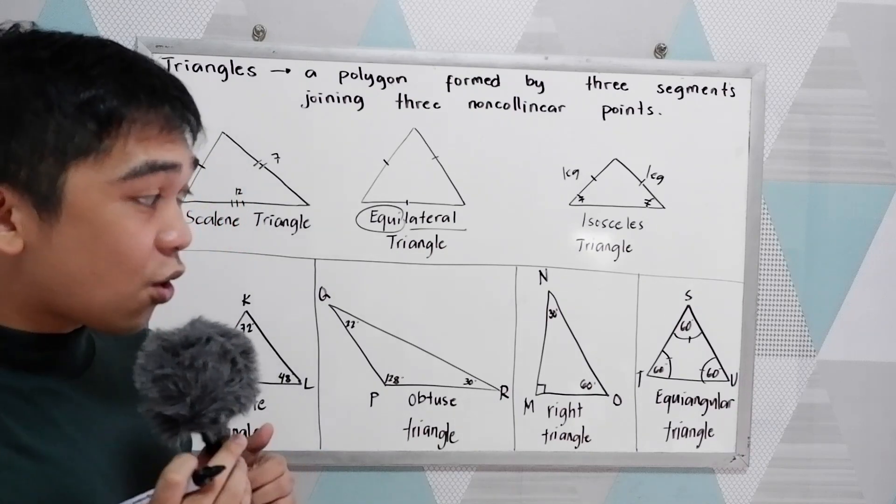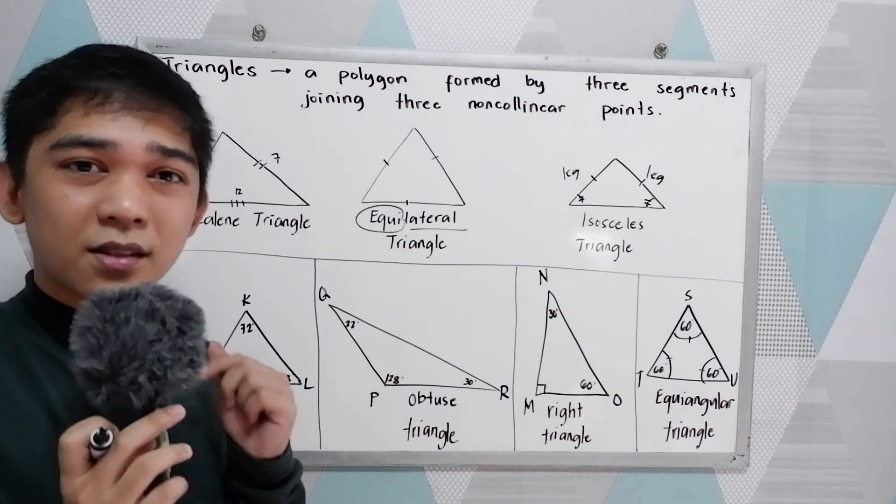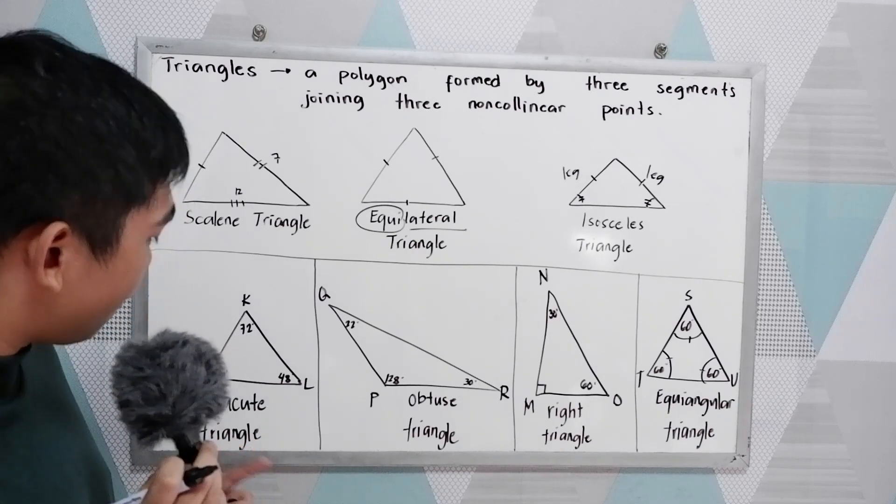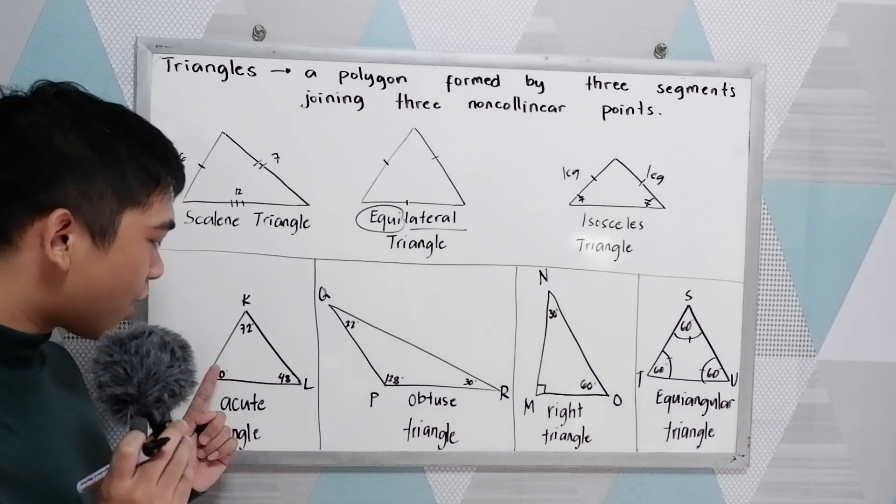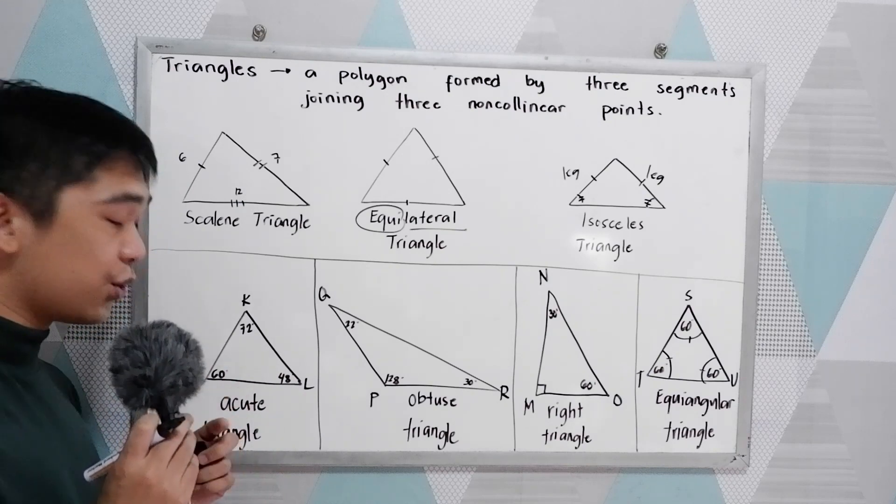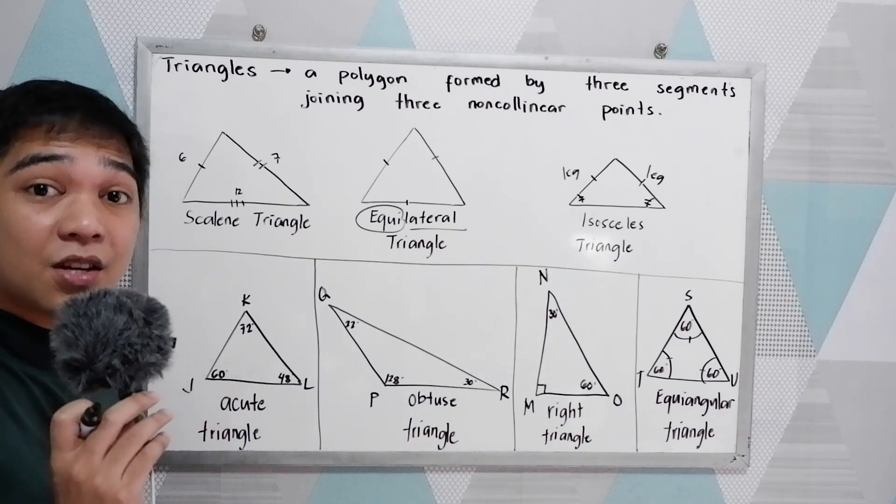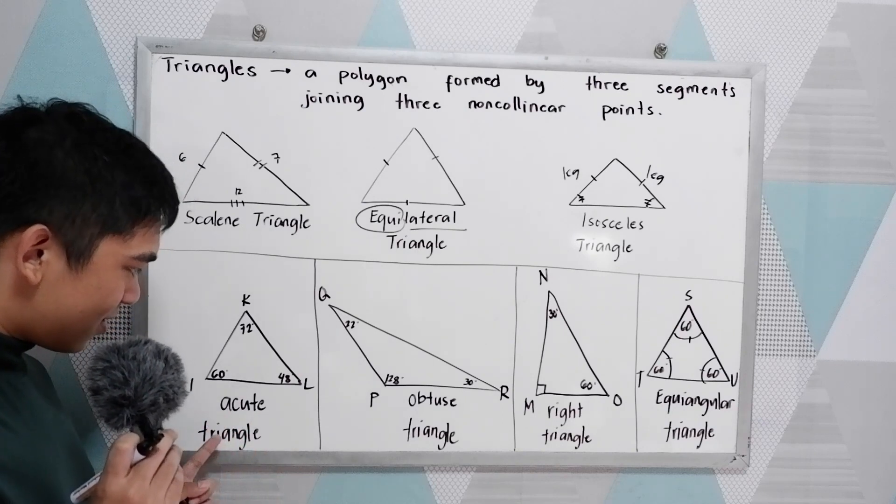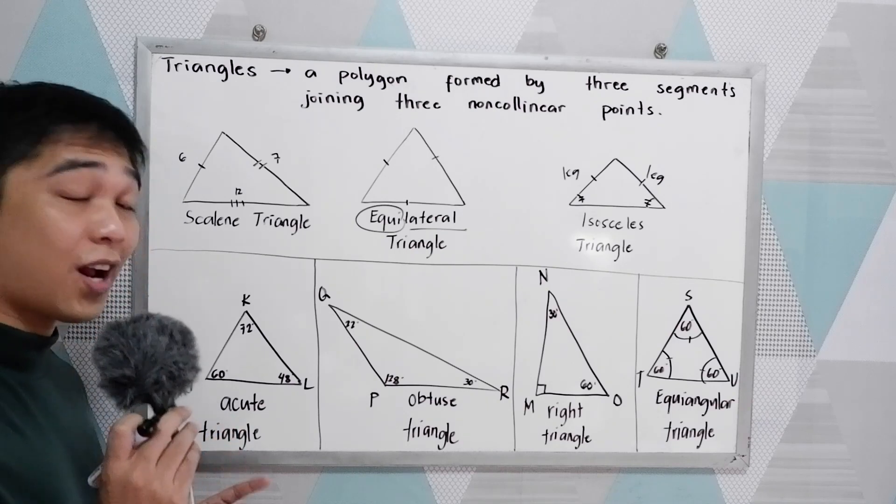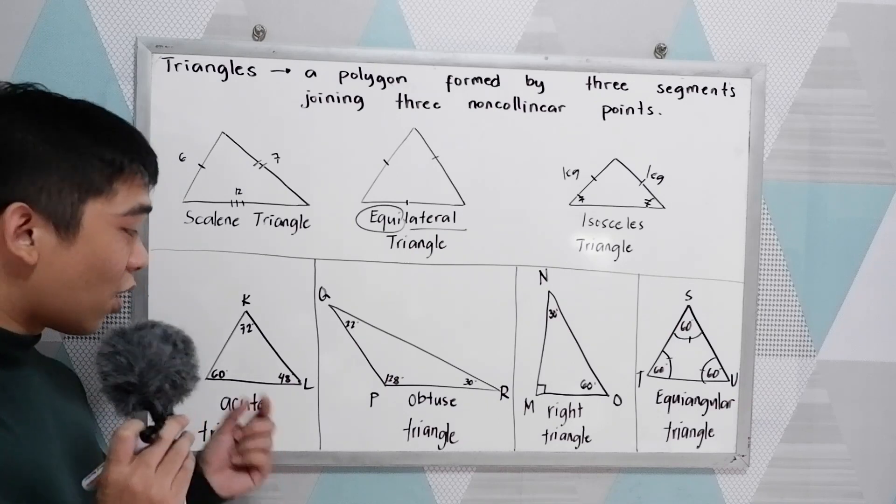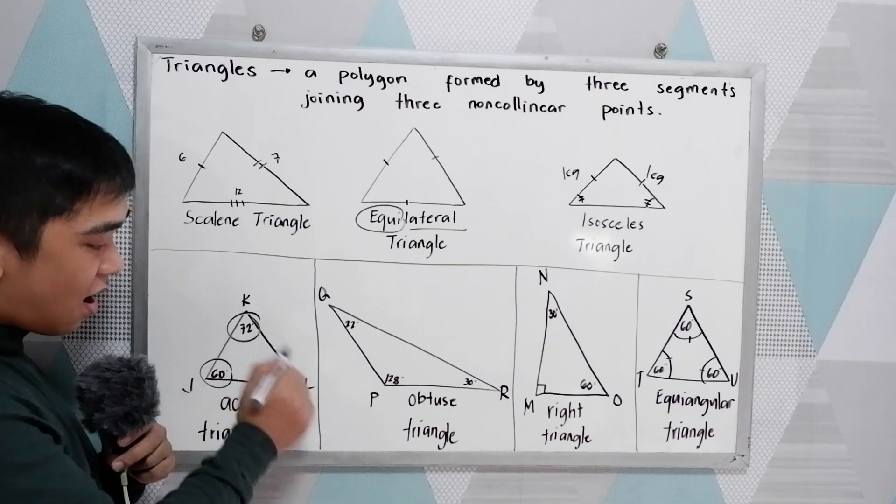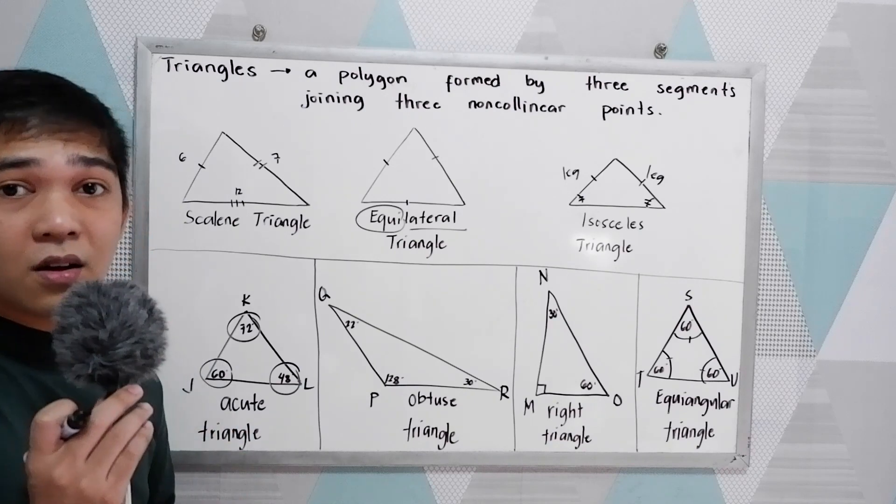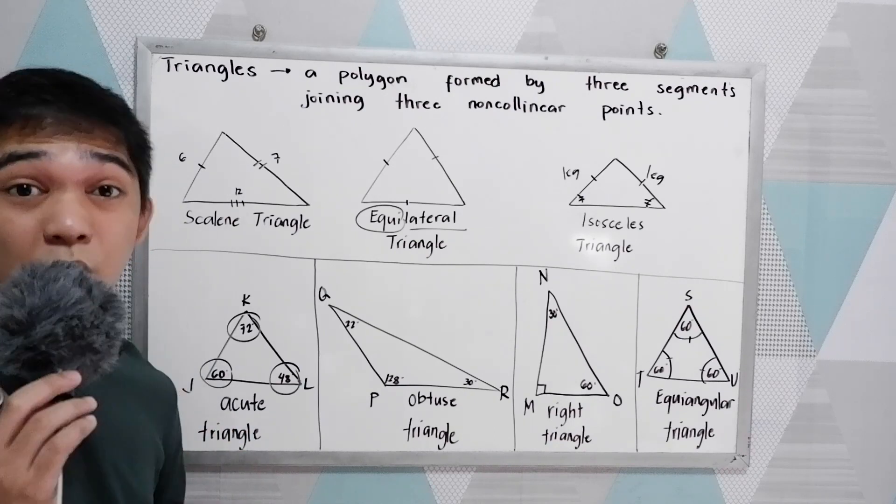Next, according to the number of angles. If all our angles are acute, when we say acute, less than 90 degrees, that is what we call acute triangle. So all the measure of the angles are acute. Of course, the sum total of the angles in our triangle is equal to 180.